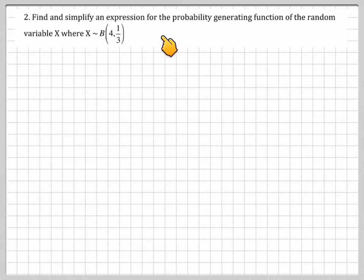Find a simplified expression for the probability generating function of a random variable X where X belongs to binomial 4, 1 third. So if X is binomial 4, 1 third, so that's four trials and probability of success of 1 third.